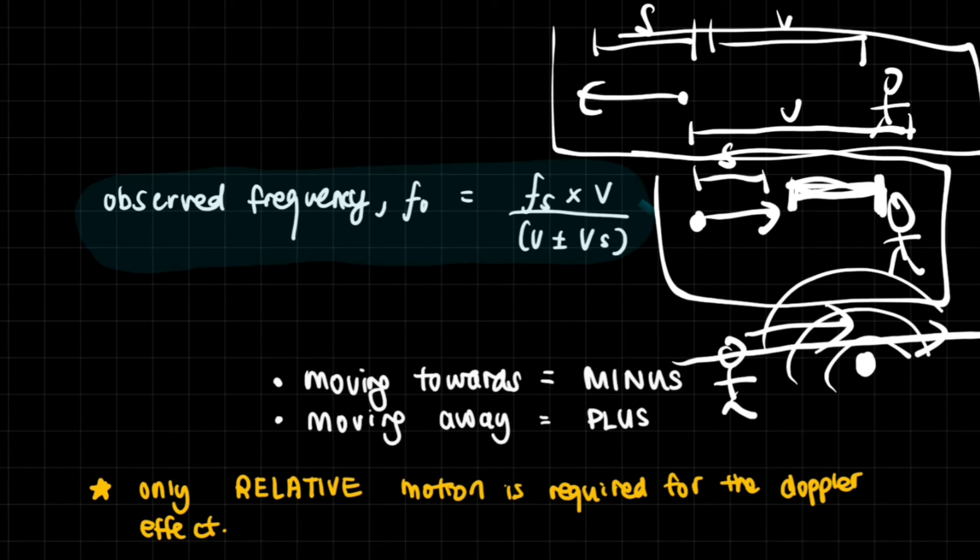So the car can be staying at the exact same spot, but you can be running and you will still hear that change in frequency as you move towards and then away from the car. But that is assuming that you can run fast enough that the audible effects of the Doppler effect are actually, you know, able to be heard.